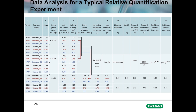Here we have an example of a dataset from three targets tested under two different treatment conditions. In column one we have the target names: actin, HPRT, and DR5. Actin and HPRT are our reference genes for normalization, and DR5 is our gene of interest. We've interrogated these three targets in untreated samples S1 to S3 and treated samples S4 to S6, testing the same six samples for each target.